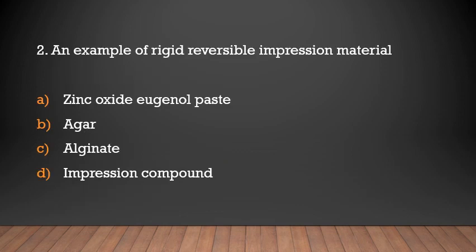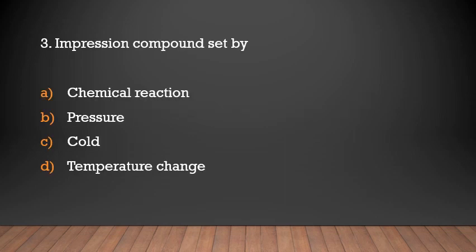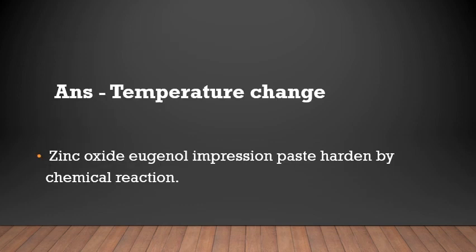An example of rigid reversible impression material — options: zinc oxide eugenol paste, agar, alginate, impression compound. Answer: Impression compound. Impression compound sets by temperature change, whereas zinc oxide eugenol impression paste hardens by chemical reaction.